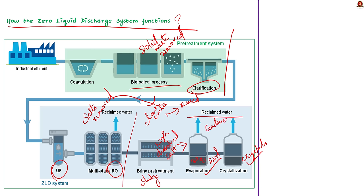These are the steps involved in the ZLD system. All the water is removed, treated, and reused. The dry solid waste and the crystallized salts are removed, compacted, and disposed of appropriately, ensuring safe disposal. In some cases the ZLD system also has a system for recovery of valuable resources like salts, minerals, and chemicals from the dry waste.